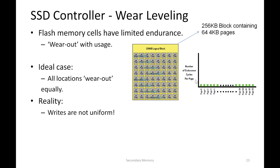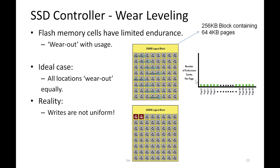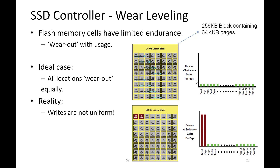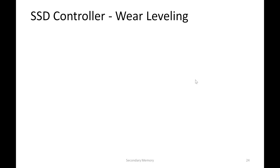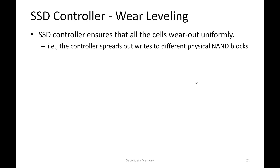But the reality is that writes of data are not uniform across pages. Here is an example of the worst case scenario where in the logical block almost all the writes were done only to the first couple of pages — page 0 and 1. In such cases, page 0 and 1 among the 64 pages will die out much sooner compared to the others. Eventually, this particular block will have only 62 usable pages. In order to handle such realistic scenarios, the SSD controller applies wear leveling.